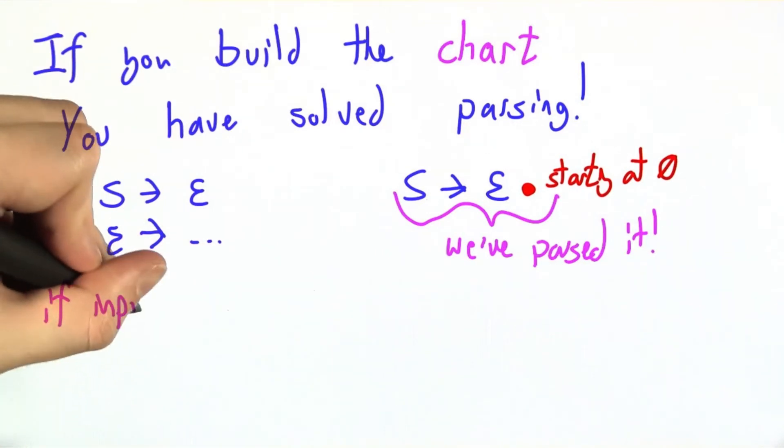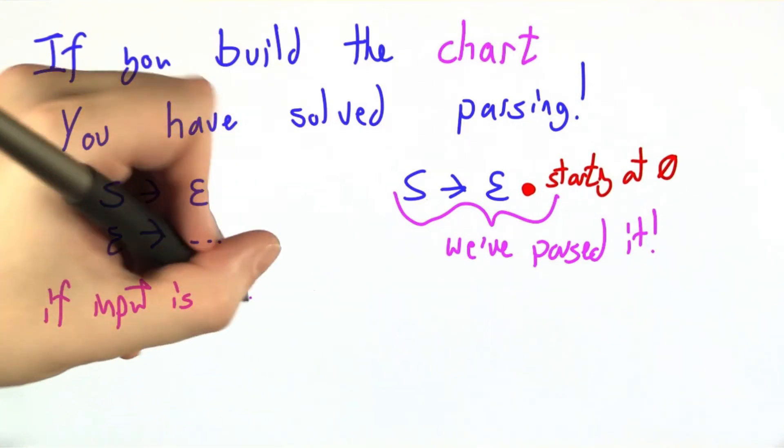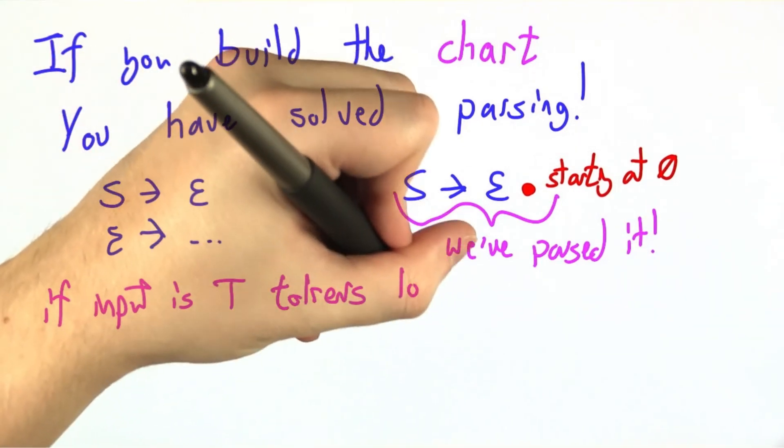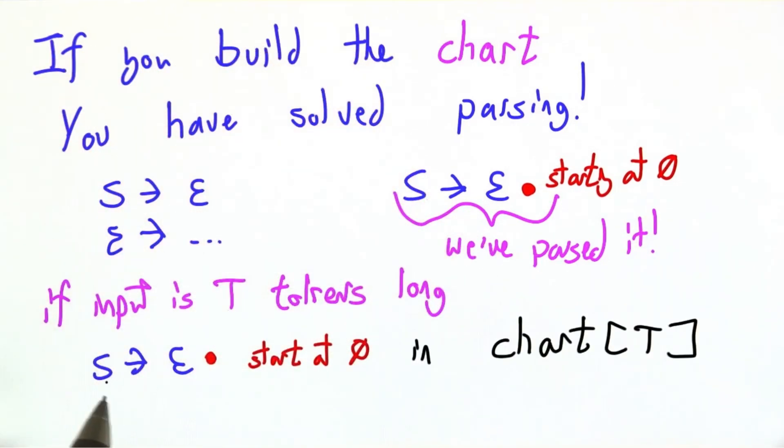So if the input is t tokens long, we just look to see if s goes to e dot starting at zero is in chart t. If it is, our input is in the language of the grammar. If it's not, our input is not.